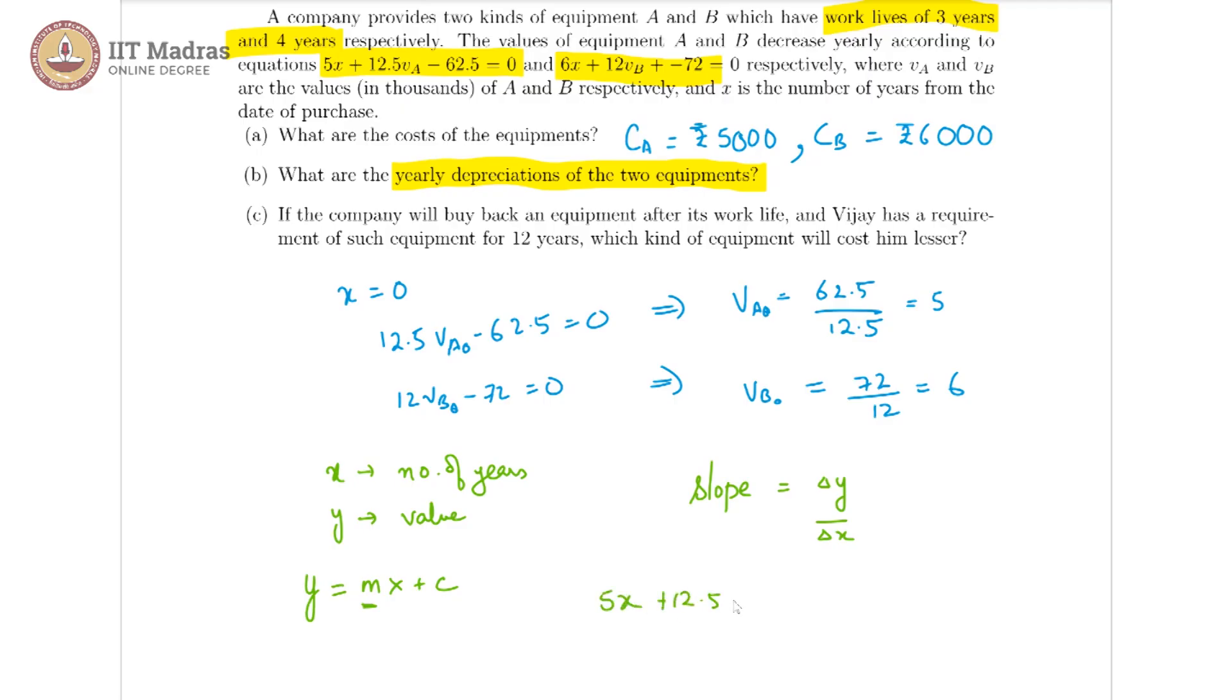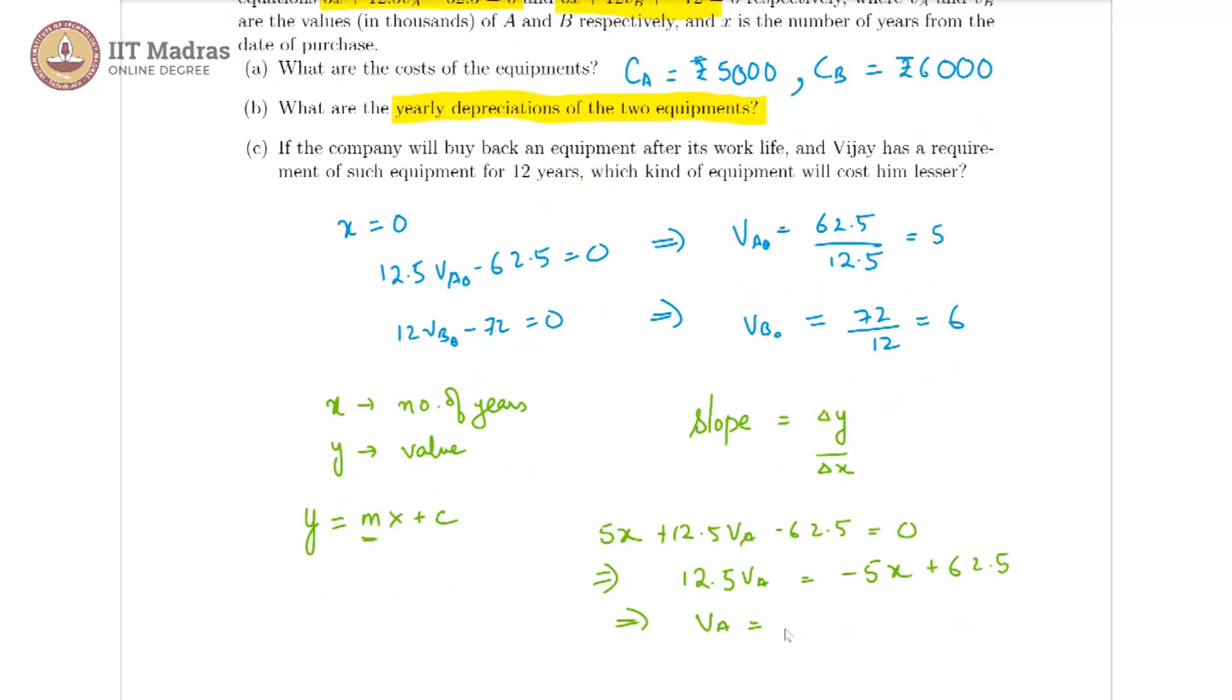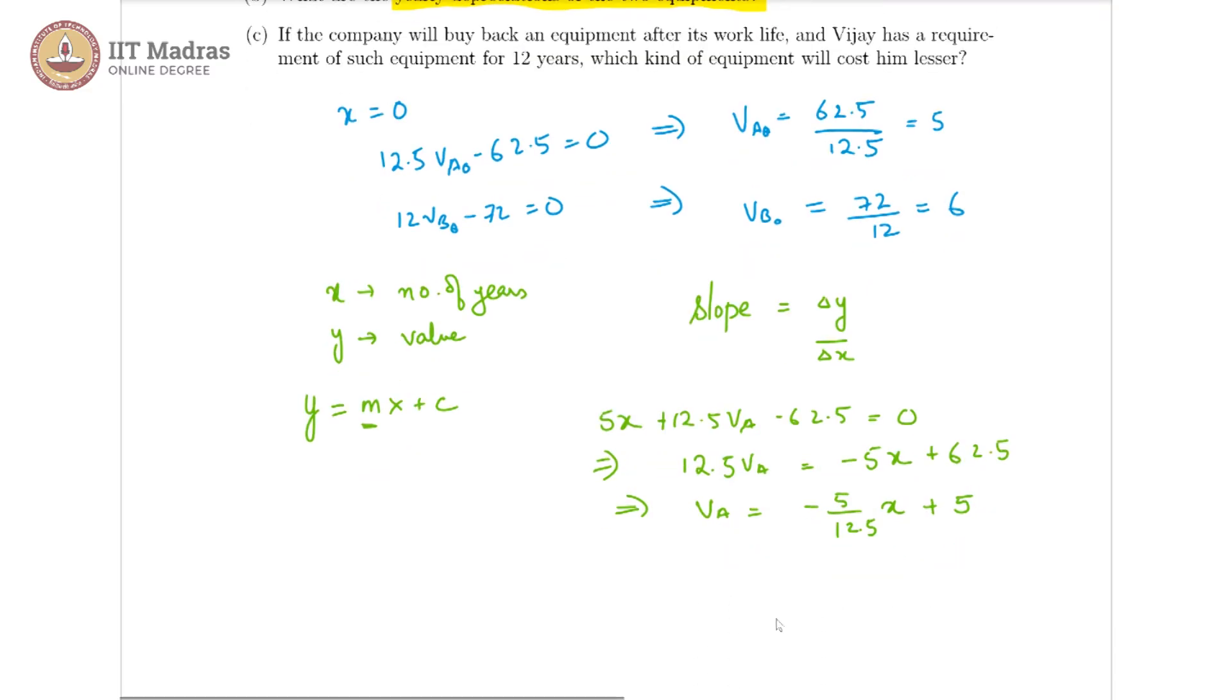So one equation is 5x plus 12.5 VA minus 62.5 is equal to 0. This would indicate that 12.5 VA is equal to minus 5x plus 62.5. Going further, then we have VA is equal to minus 5 by 12.5 x plus 62.5 by 12.5.